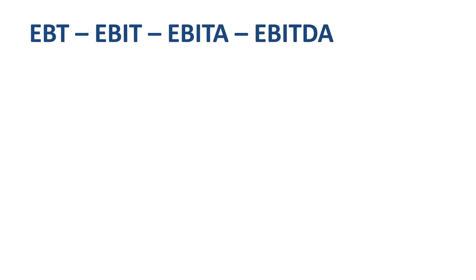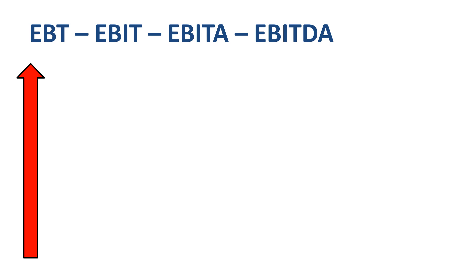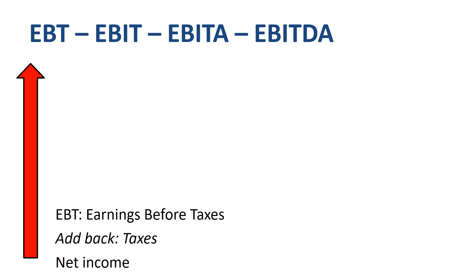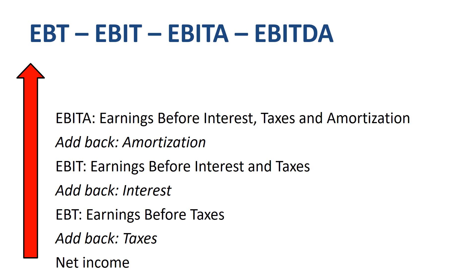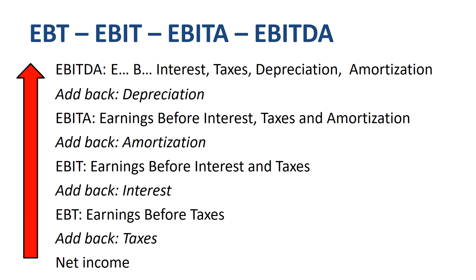Let's walk through step by step how to get from net income to EBITDA. If you add back corporate income tax expense to net income, you get to EBT. If you add back interest expense to EBT, you get to EBIT. If you add back amortization expense to EBIT, you get to EBIT-A. If you add back depreciation to EBIT-A, you get to EBITDA.